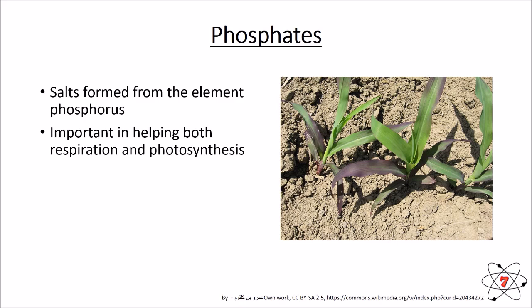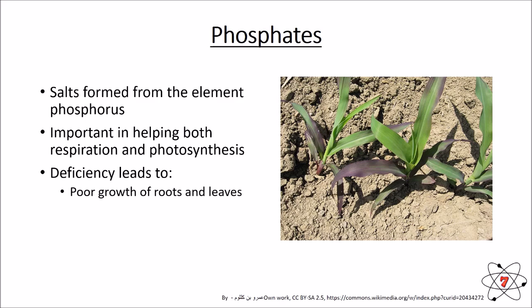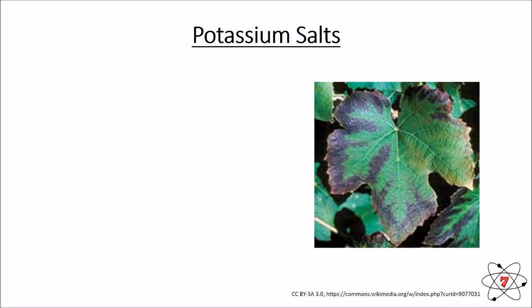Without phosphates, there's not going to be as much respiration — less of the glucose is going to be broken down and the plant isn't going to have enough energy. A deficiency of phosphates can lead to poor growth of roots and leaves, a low fruit yield, and very small and purple leaves.